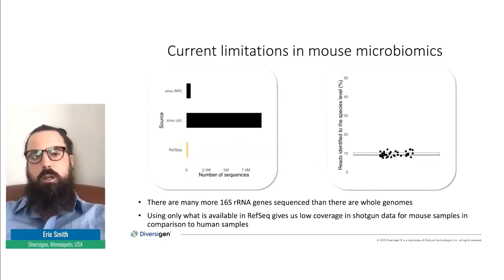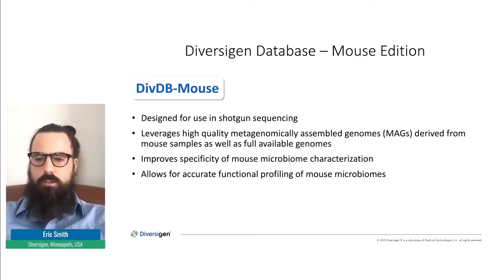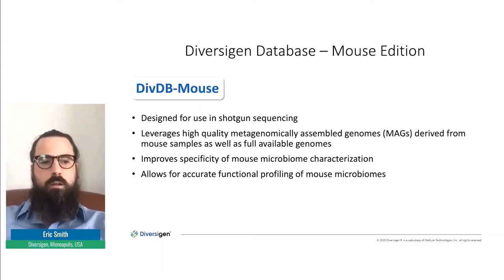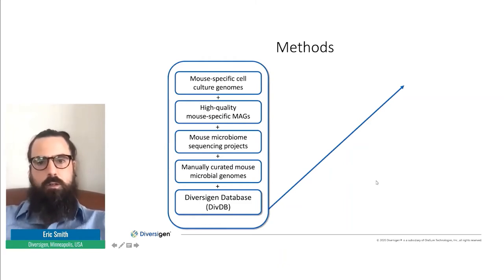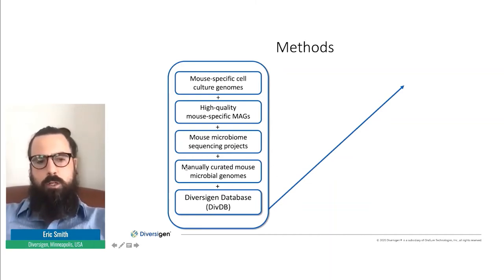We at Diversagen set out to rectify that by creating a database we're calling DivDB Mouse. It was designed specifically for shotgun sequencing and leverages a number of different resources: MAGs as well as high-quality full genome assemblies. We took genomes from mouse-specific cell cultures, high-quality MAGs, sequences from mouse microbiome sequencing projects, and then manually curated and went through NCBI to select a number of mouse microbial genomes.